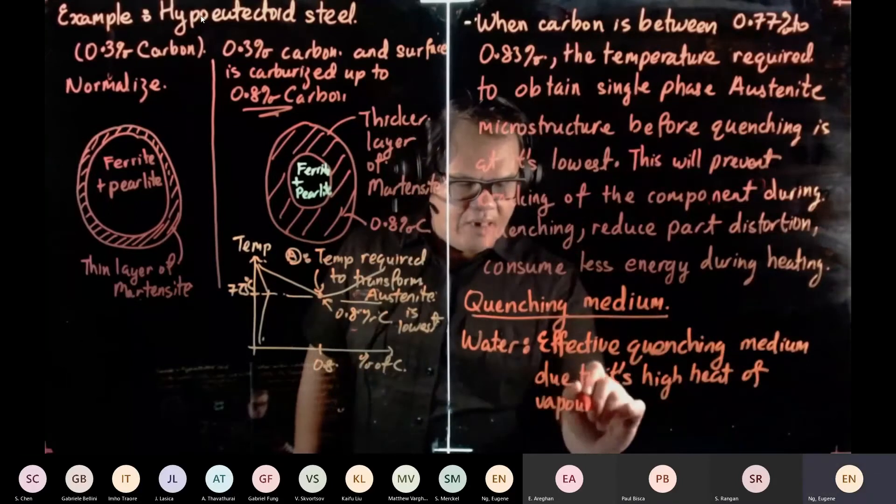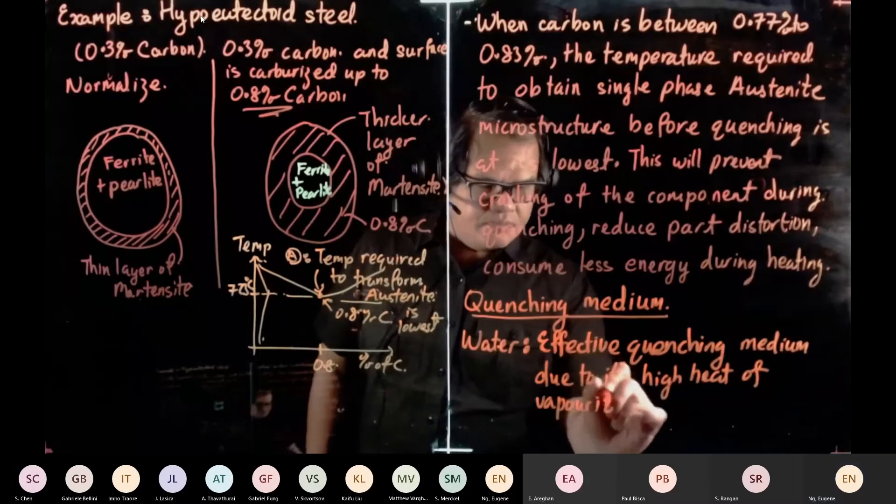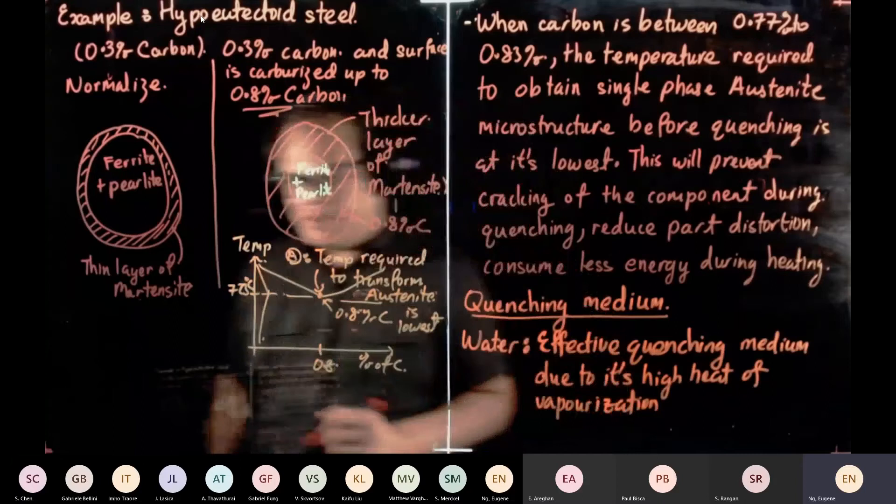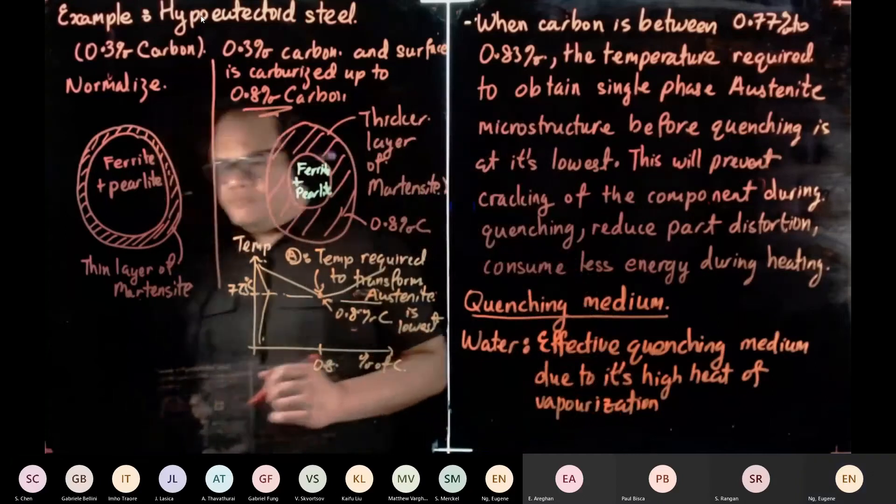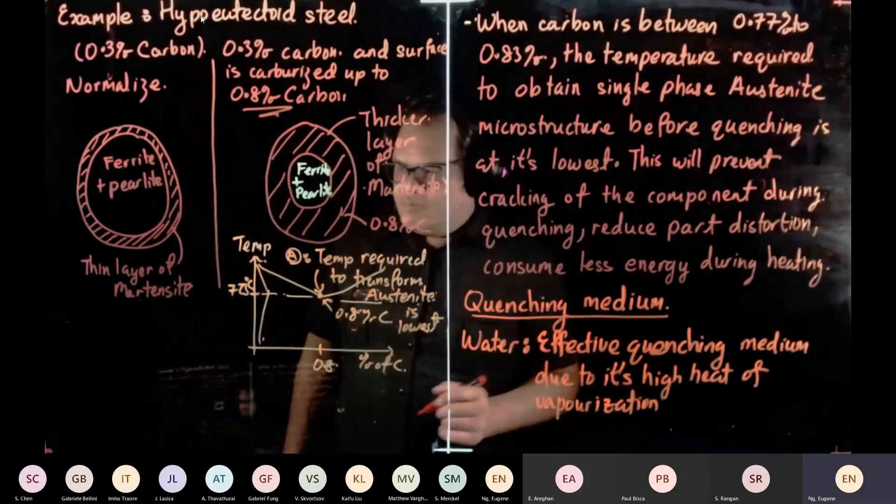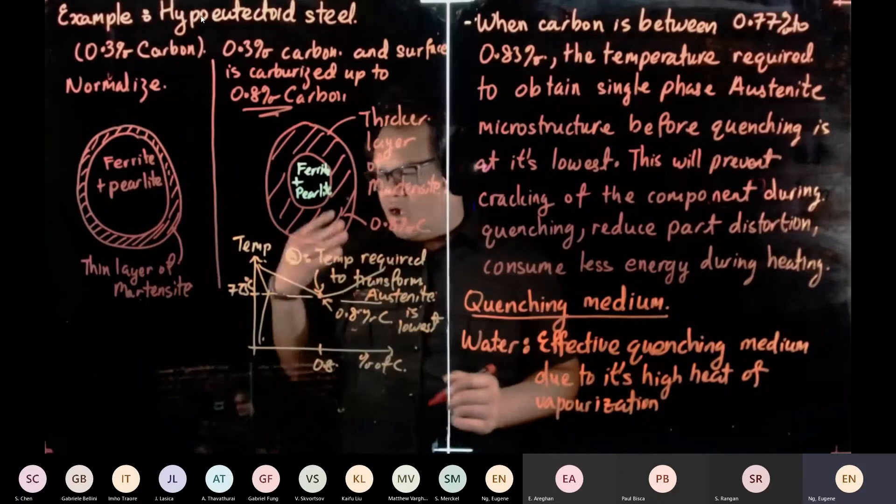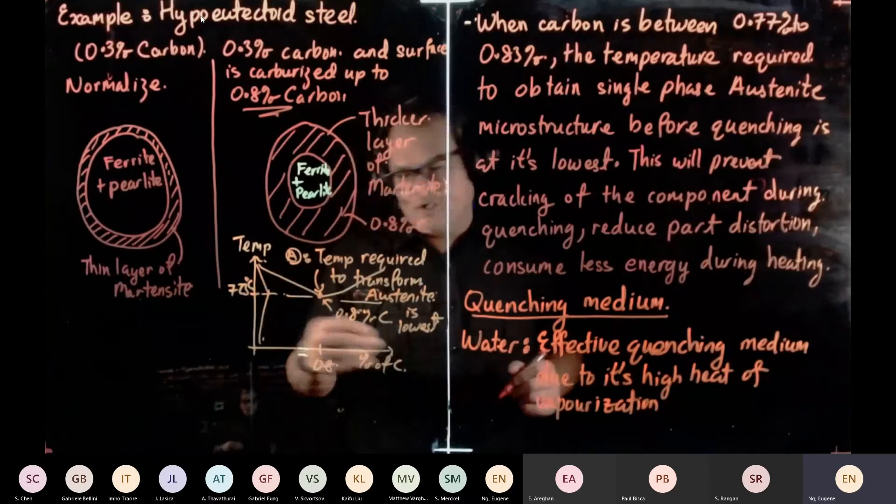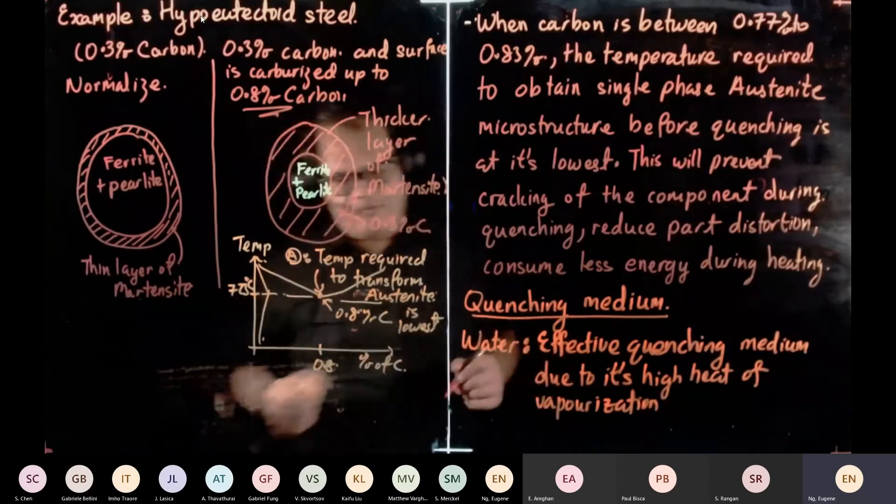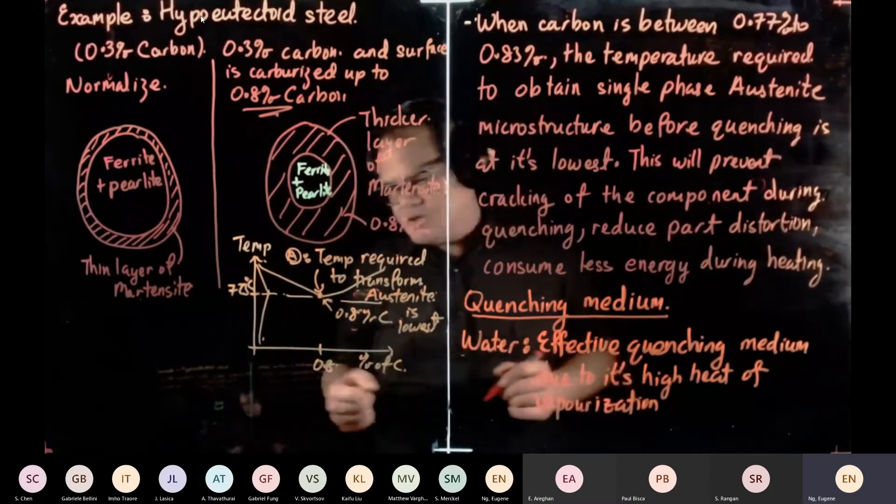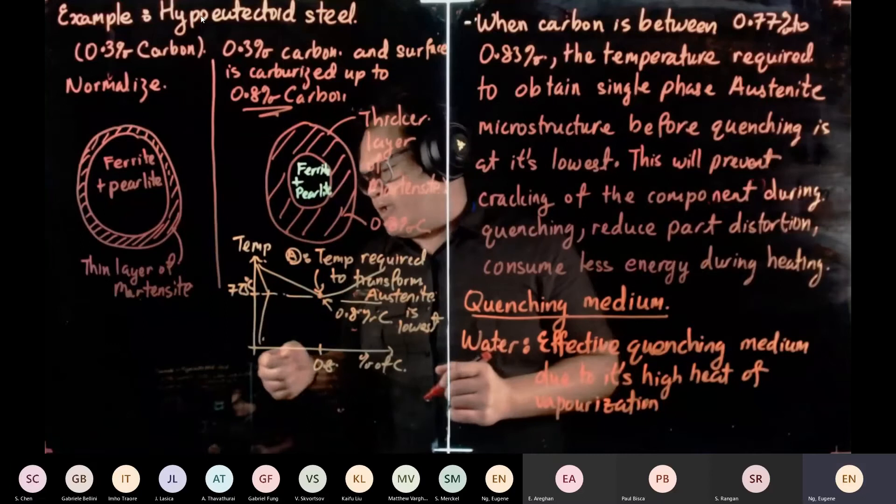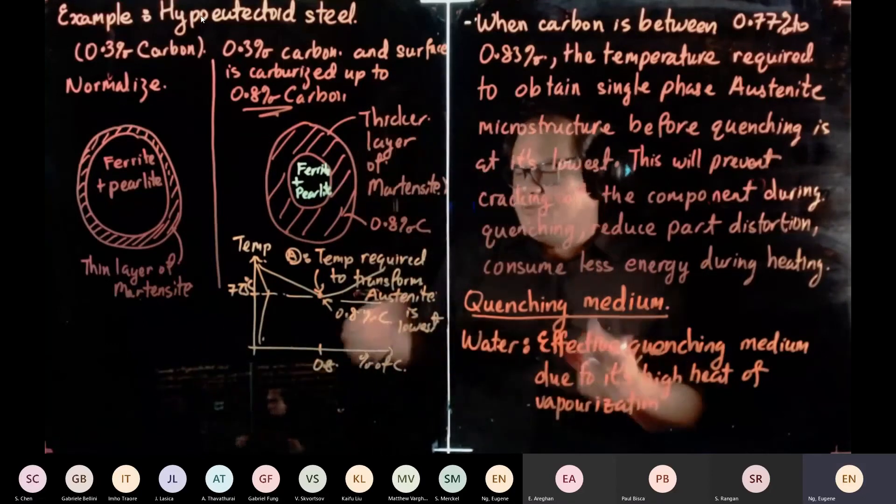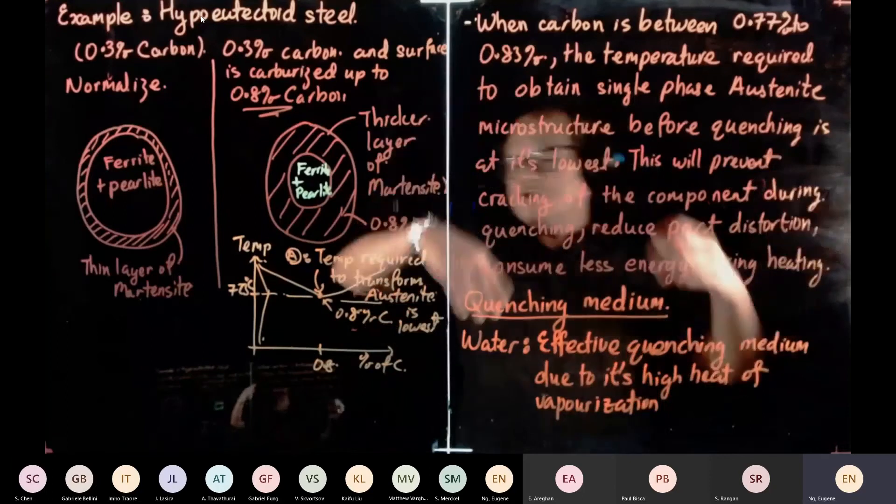So what do I mean by high heat of vaporization? So it requires a lot of energy to transform from liquid to become gas. Because when we put the heat away from the workpiece, it requires the medium to store the energy and then the medium will transform.